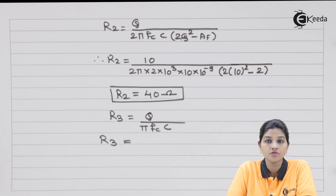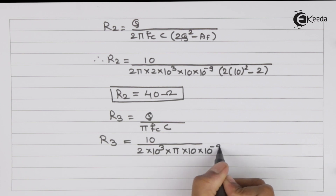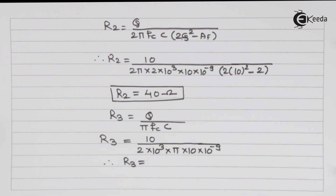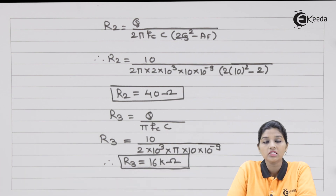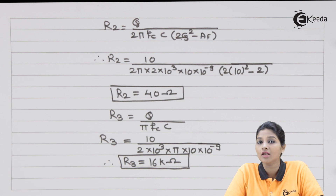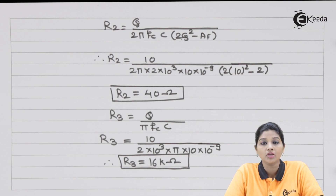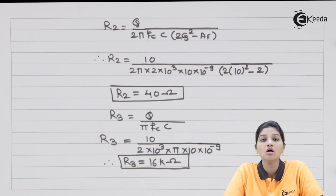R3 is given by the formula R3 = Q / (π × fc × C). After calculation, R3 = 16 kΩ. This is how we can design a narrow band pass filter using the values of capacitor, center frequency, and Q factor. The key conditions to remember are: Q must be greater than or equal to 10, and the gain must always be less than 2Q². Thank you for watching. Stay tuned and subscribe.